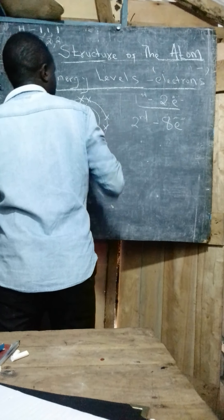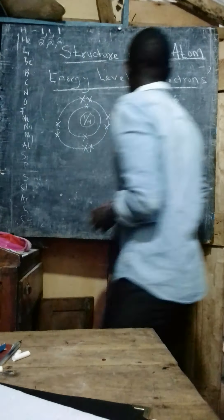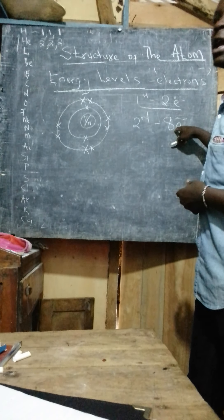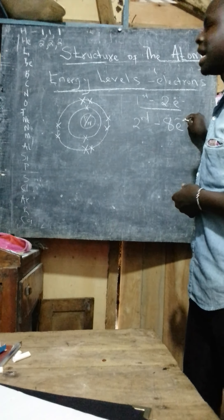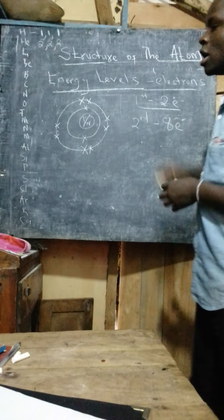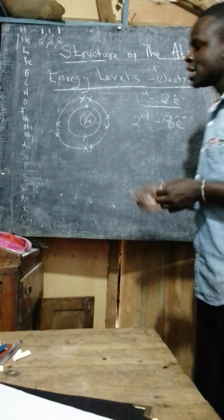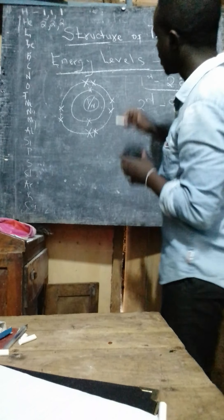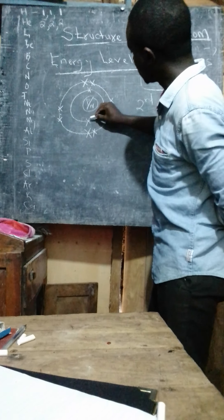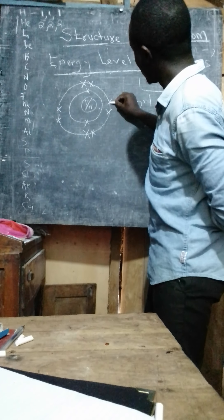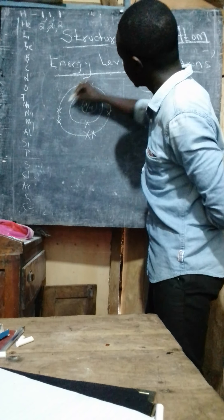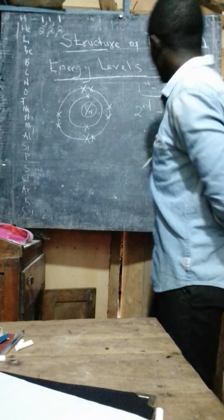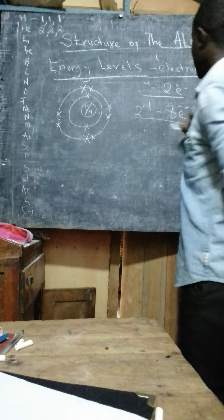You should note that the number of energy levels varies from element to element. What determines the number of energy levels that an atom of an element will have is the number of electrons. So, electrons are the ones that determine the number of energy levels.